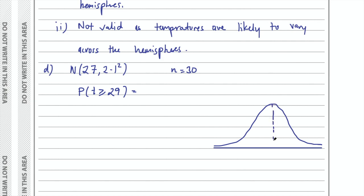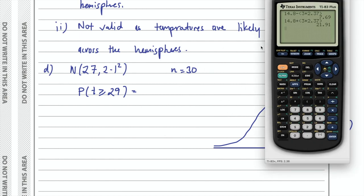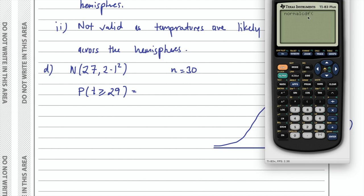We use normal CDF, which belongs in the distribution menu. On mine it's the second option. For the syntax, we put in the minimum of 29, the upper limit as a large number like 9999, then the mean and standard deviation. Once you input all of that, you get your probability — about 17% for days above 29 degrees.